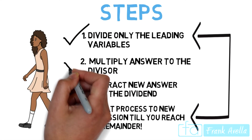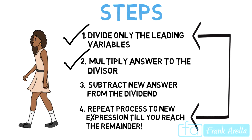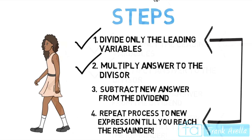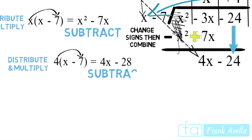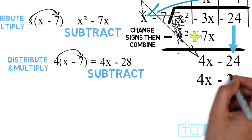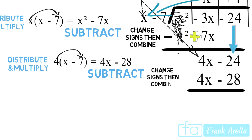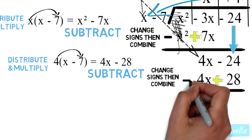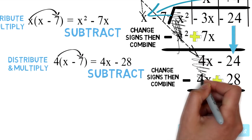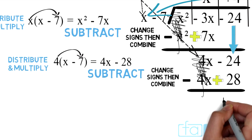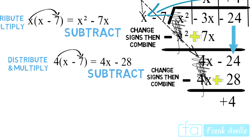We've completed Step 2 again. Moving to Step 3: subtract 4x minus 28, placing it in the appropriate placeholders. Whenever subtracting, change the sign and then combine. Negative 28 becomes positive 28, and positive 4x becomes negative 4x. Combining like terms: positive 4x and negative 4x cancel out, and negative 24 combined with positive 28 leaves us with positive 4.